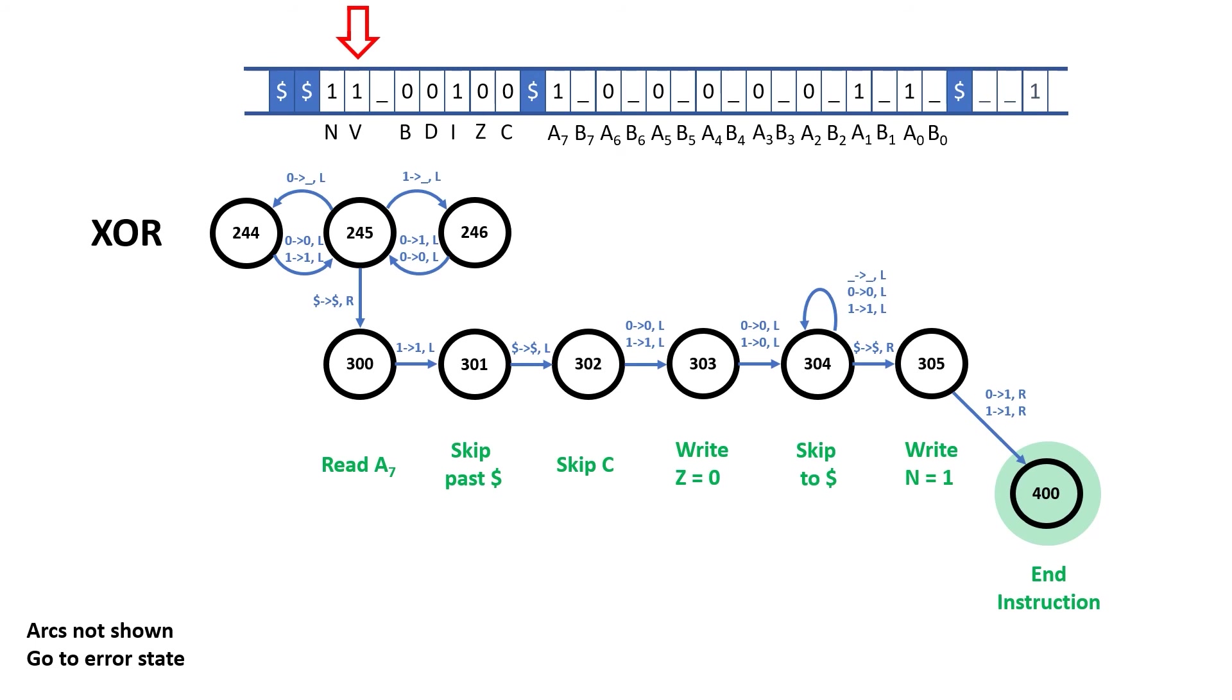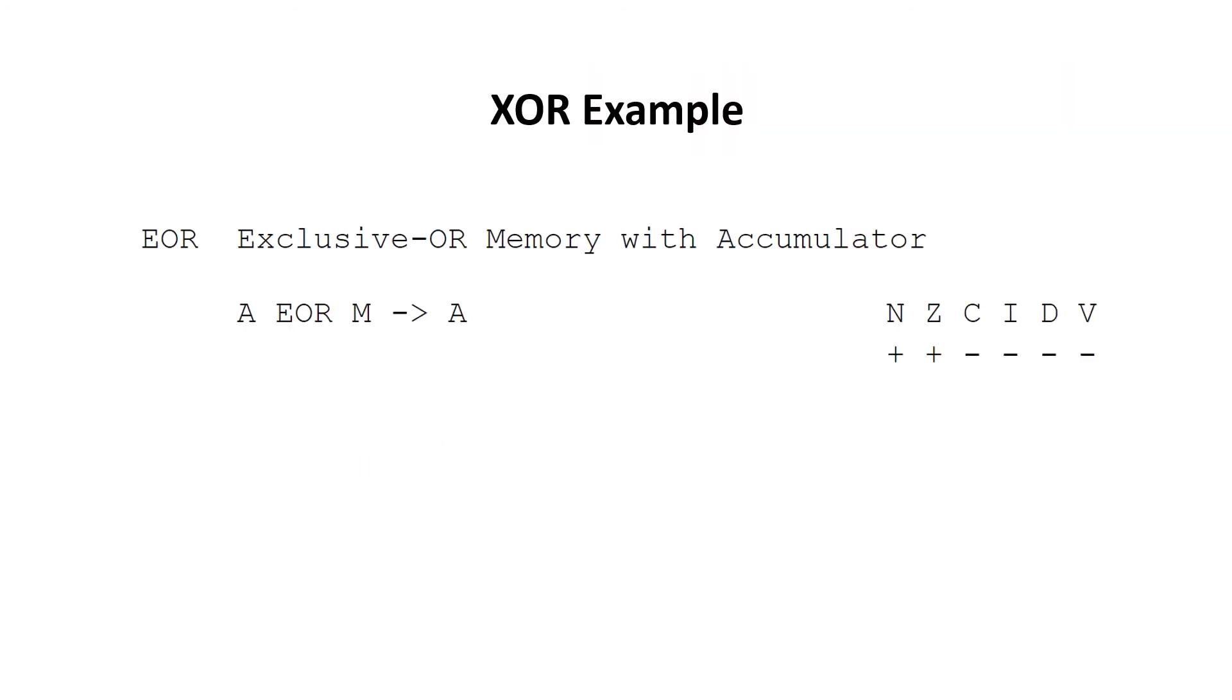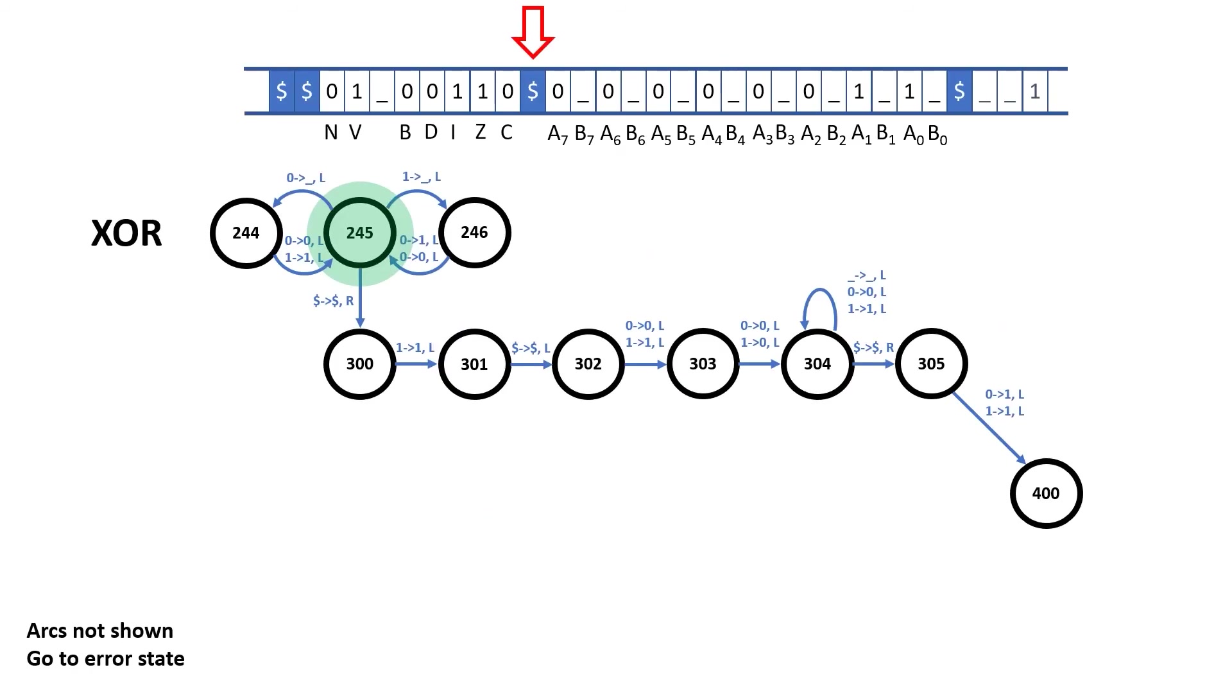That's all good and well, but what if the value in the A register had been 3 instead of 83? This time I want the negative flag and the zero flag both to be 0.